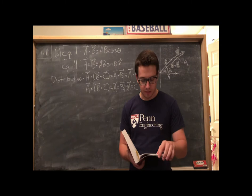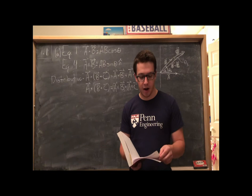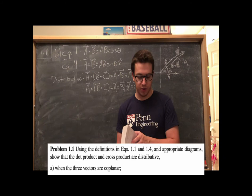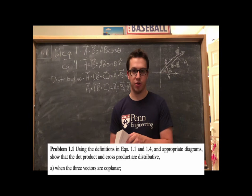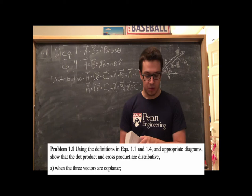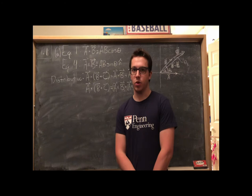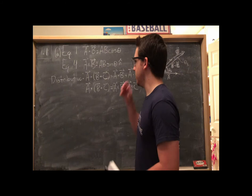And so this first question that we're going to be doing is very introductory. It focuses largely around just working with cross product and dot product. And specifically, it says, using the definitions and equations one and four and appropriate diagrams, show that the dot product and cross product are distributive. I'm only going to be doing part A, which specifically asks you to show that they're distributive in the case where the three vectors are coplanar. Part B asks you to do it in the general case. That's a bit more heavier on the mathematical side. And for that reason, I just want to start with something that's pretty easy and pretty short to show.